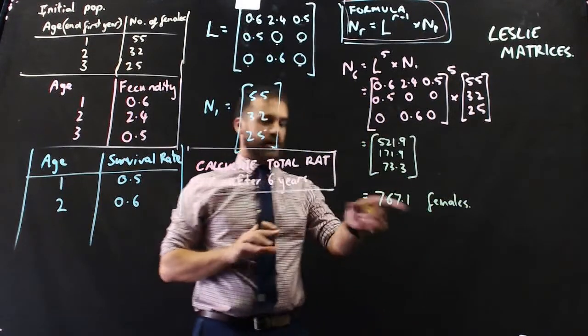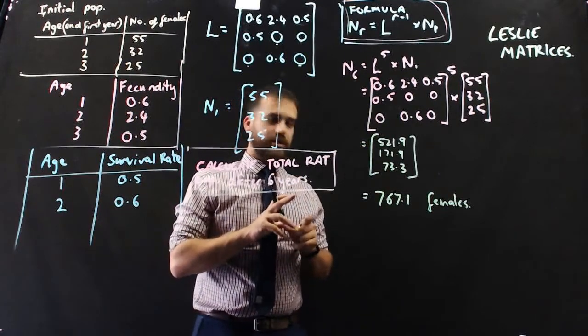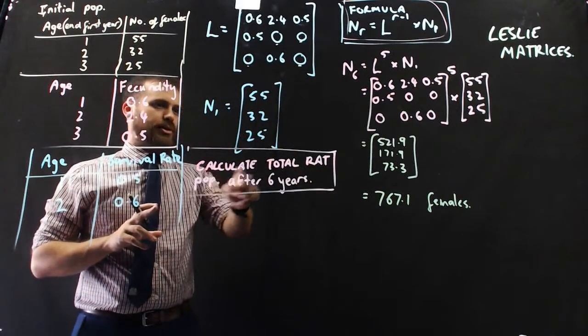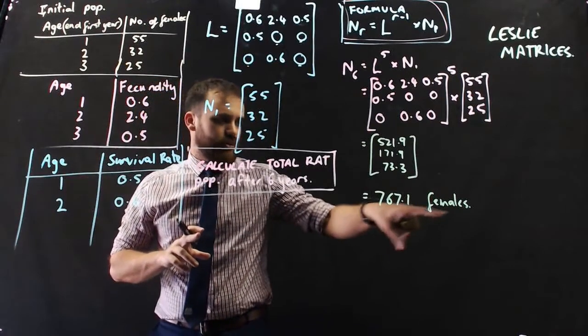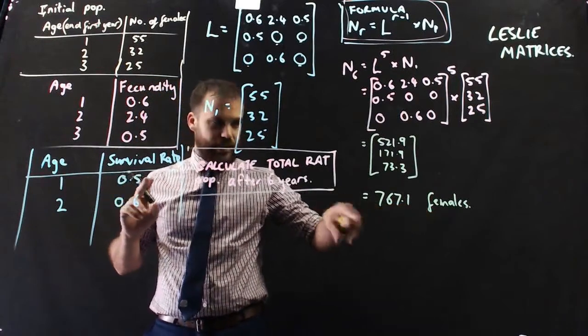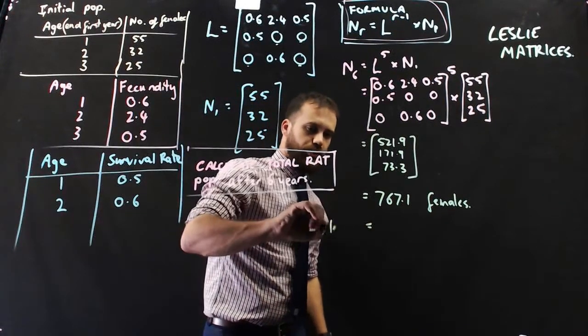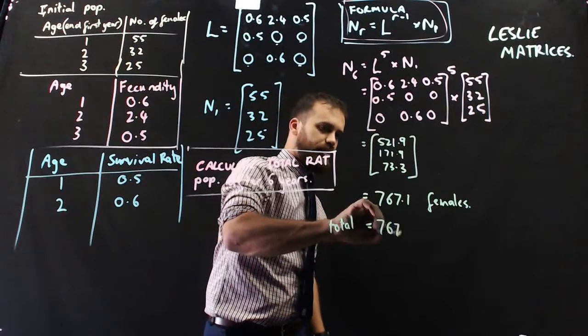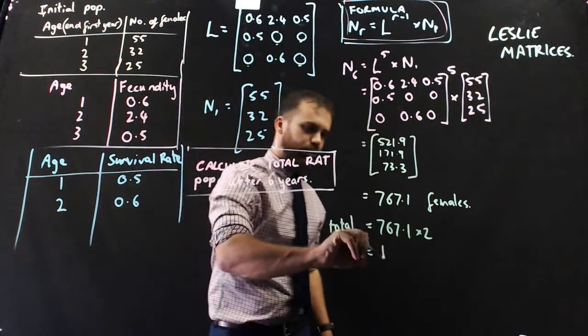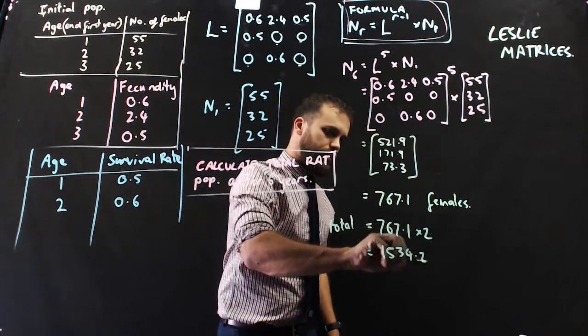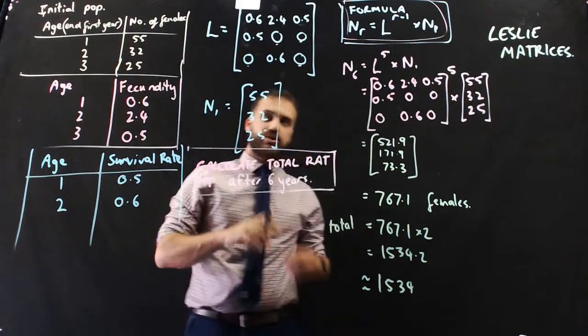If you add those numbers together, you'll get 767.1 females. Obviously that doesn't make a lot of sense, so we'll probably just round it down to 767. But be really careful, because the question says calculate the total rat population after 6 years. We've calculated the number of females, so we probably need to take that number and multiply it by 2. So total population equals 767.1 times 2 equals 1,534 total rats.